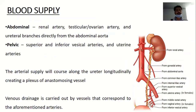Regarding blood supply, ureters have a segmental blood supply. The upper part is supplied by the renal artery followed by gonadal vessels and ureteric branches directly from the abdominal aorta. The pelvic portion is supplied by superior and inferior vesical arteries, in females the uterine arteries, and also receives some branches from the middle rectal artery. Arterial supply courses along the ureter, creating a plexus of anastomosing vessels. Venous drainage is carried out by vessels corresponding to the aforementioned arteries.